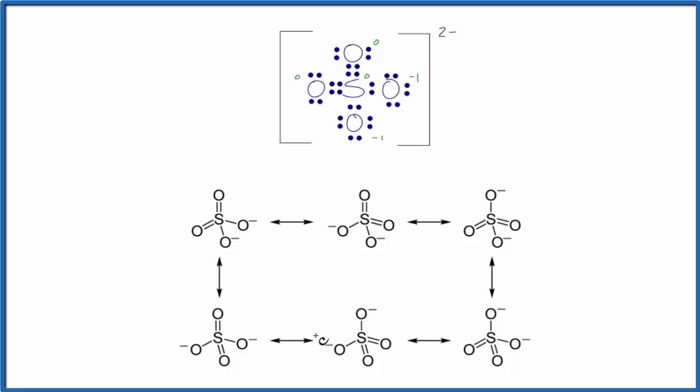For these structures, the lone pair electrons are not drawn. So there are six equivalent resonance structures for the sulfate ion. We have the double bond here and here. Then it moves over to the right, shifts to the center, and so on. So there's six different ways we could draw this.